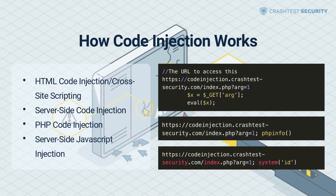HTML code injection and cross-site scripting. Attackers commonly use HTML code injection vulnerabilities to compromise how users interact with a web application. The hacker injects malicious HTML into a trusted website, executing untrusted scripts on the end-user's browser. Since the browser cannot detect the malicious script, the attacker can access session tokens, cookies, and other crucial data that the browser retains.